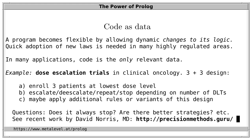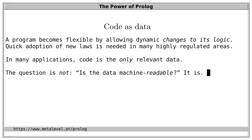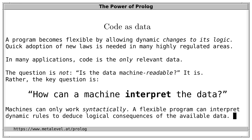We can perform this analysis of the rules themselves without running a single clinical trial, just by interpreting the rules and reasoning about them using, for example, abstract interpretation or exhaustive enumeration. If you're interested, check out recent work by David Norris available on his webpage. When talking about data, the question is not whether the data is machine readable — because a JPEG or video file is also machine readable. Rather, the key question is: is the data machine interpretable? And how can a machine interpret it? Because machines can only work syntactically, not semantically.